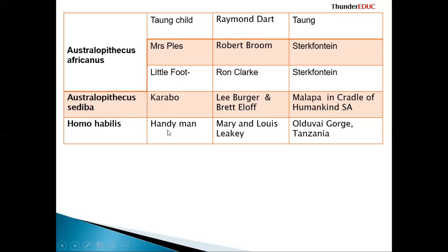Then another one is Homo habilis. Homo habilis means the handyman — Homo means man, and habilis means handy. Who discovered it is Mary and Louis Leakey in Olduvai Gorge, Tanzania.